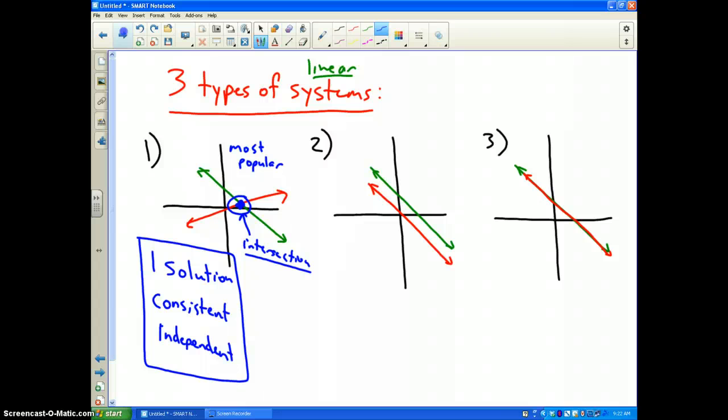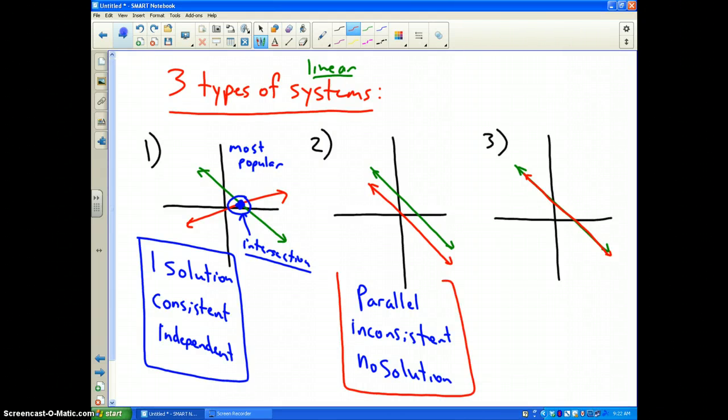The second type of linear system is the one where the two lines are parallel. In this particular situation, this is called an inconsistent system. Inconsistent because there is no solution to the problem. In this case, when you have a system that meets this criteria, the two lines will have the same slope, but they are going to have different y-intercepts.